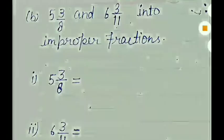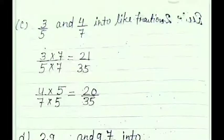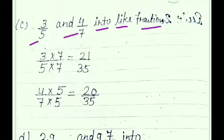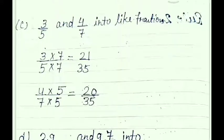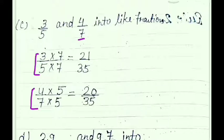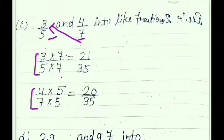Next question, C part: convert 3 upon 5 and 4 upon 7 into like fractions. To convert, we cross-multiply denominators only. For the first fraction 3 upon 5, multiply upside and downside by 7 (second fraction's denominator). For the second fraction 4 upon 7, multiply upside and downside by 5 (first fraction's denominator).